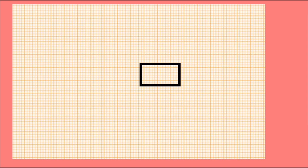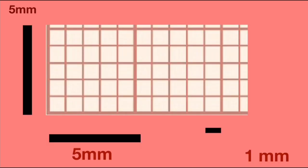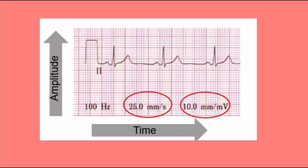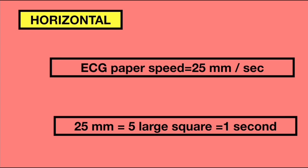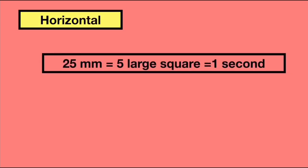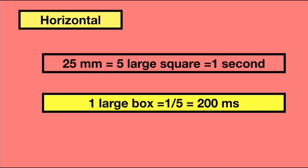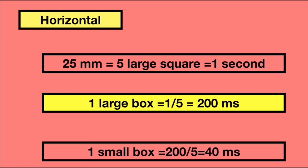This picture shows a normal ECG paper consisting of small and large squares. One large square is 5 mm and one small square is 1 mm. The horizontal axis measures time and the vertical axis measures voltage, that means amplitude. At the start of the ECG, you can see a calibration signal with a height of 10 mm which equals 1 mV. You can also see the speed of ECG paper as 25 mm per second. So in the horizontal axis, 25 mm equals 1 second, which equals 5 large boxes. Therefore, 1 large box equals 200 ms and 1 small box equals 40 ms.